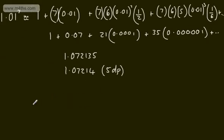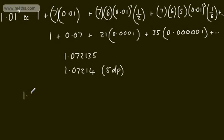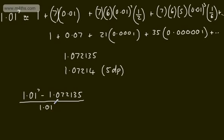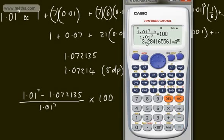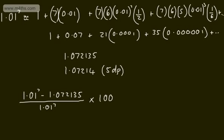We might also be asked to find the percentage error. We compute (1.01^7 − 1.072135) ÷ 1.01^7 × 100. Storing our approximation as A and evaluating this expression gives a percentage error of approximately 3.28 × 10^−5, which is incredibly small. This shows just how accurate these binomial approximations can be.